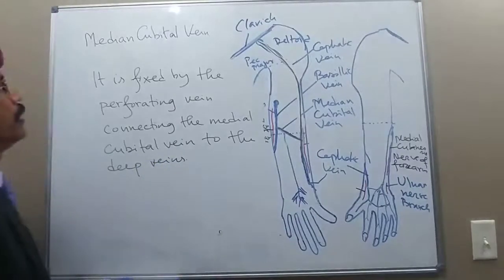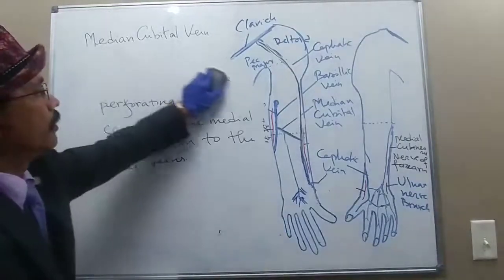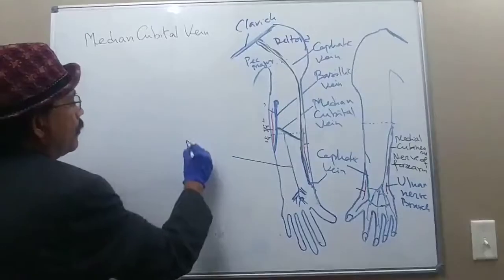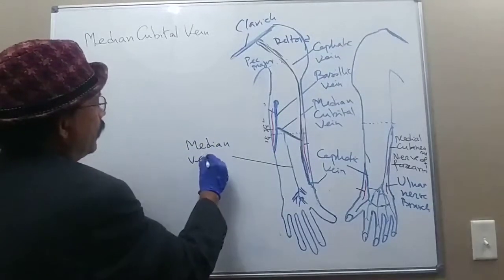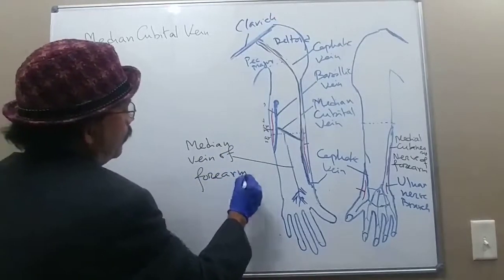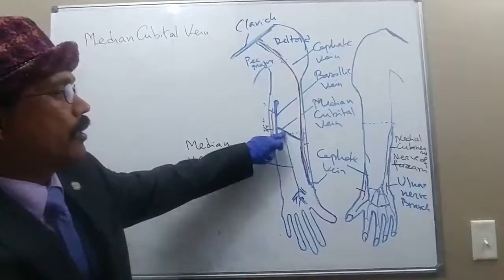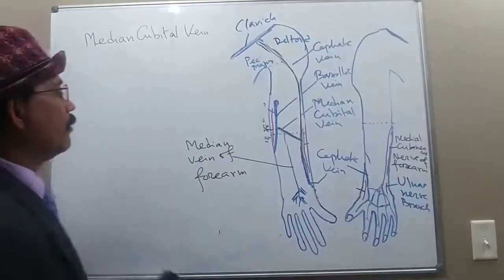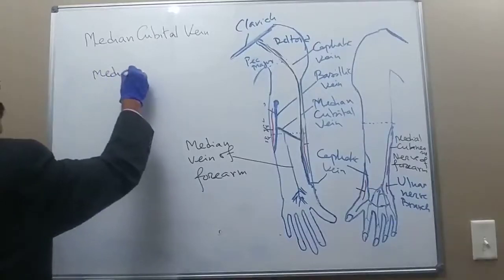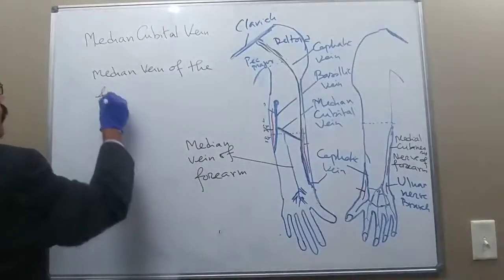There is another vein called the median vein of the forearm, which is highly variable. It runs between the cephalic vein and the basilic vein, and it may communicate with the median cubital vein or it may replace the median cubital vein.